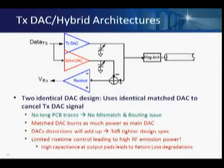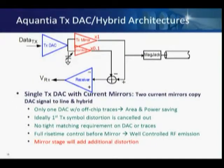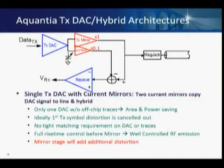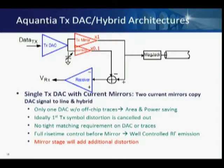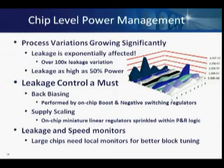Another approach eliminates the delay lines using a replica DAC similar to the TX stack — this removes the routing complexity but adds power, requires two DACs whose distortions add up, and still has the RFI emission problem. The approach we took uses a single DAC with analog mirroring. Clear advantages: only one DAC, no long traces, and by controlling capacitance isolated from the line — not affecting return loss — we can very well control RFI emission. As a result, in 48-port switches we pass RFI emission without problems even using long cables, while other approaches have problems unless using shorter cables.